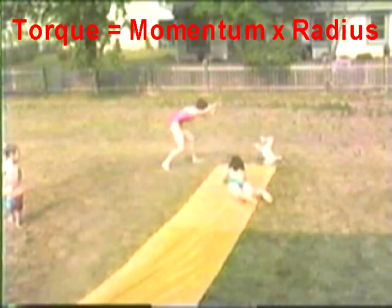Now torque is defined by the change in momentum times the radius. In this example, in the face plant, the radius center is at the face and the legs are at the outer tip of the radius. Therefore, as the momentum is transferred to the face, there's a net rotation.